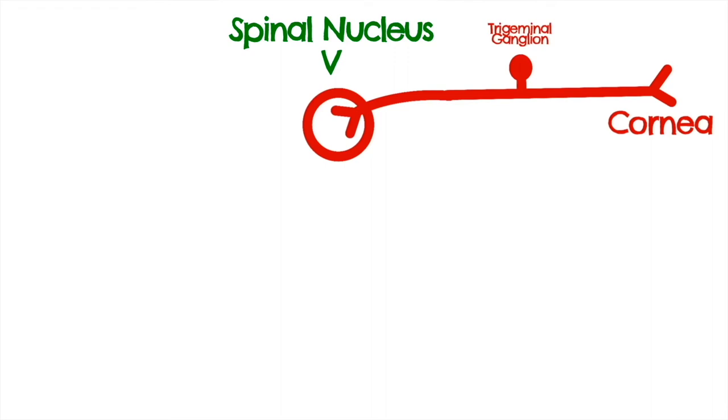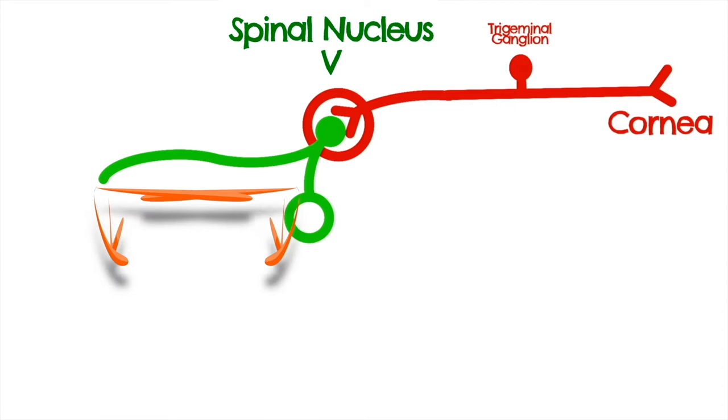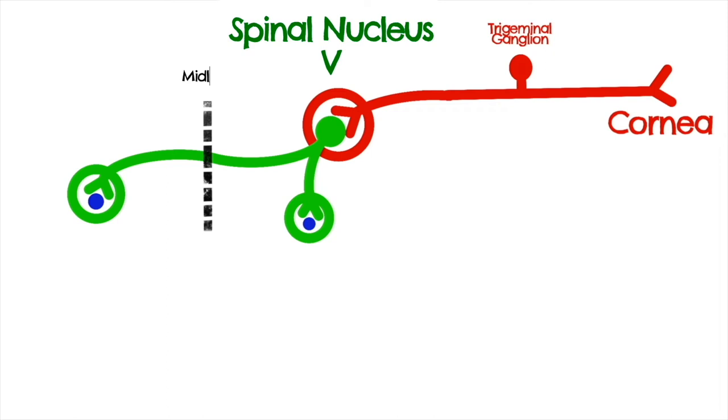On its journey, it passes through the trigeminal ganglion. The trigeminal nerve then synapses in the spinal nucleus of trigeminal. Motor information is then carried bilaterally in the facial nerve which branches into the temporal branches to reach the orbicularis oculi muscle which controls eyelid closure.